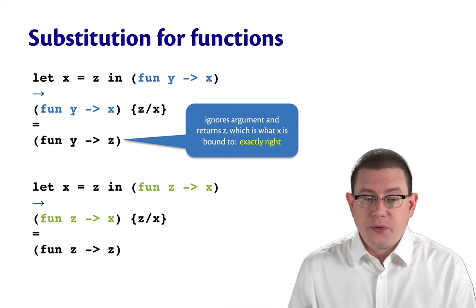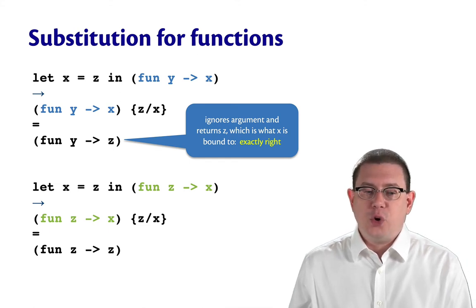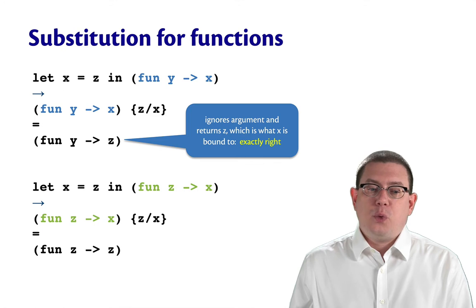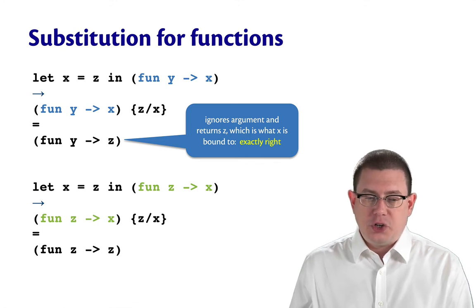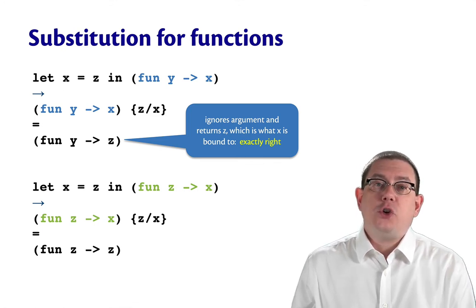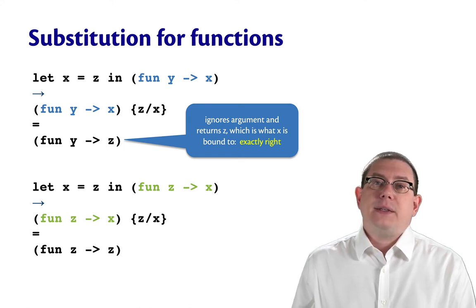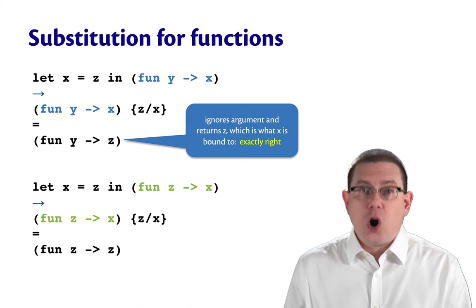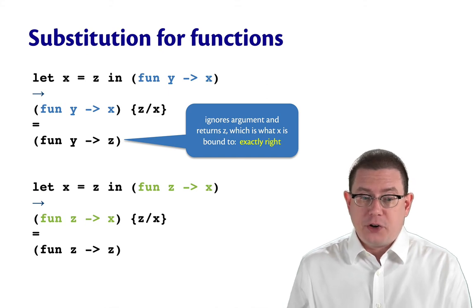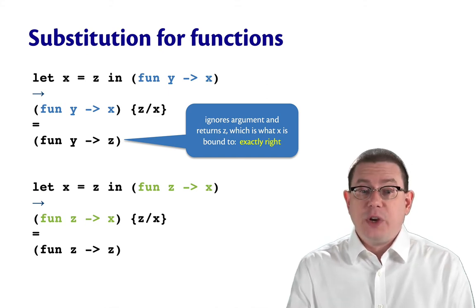Now what about the other function, fun z arrow x, which I put in orange. Well, if you work through the definition of substitution here, we're going to get to substituting z for x inside of that function. But since z is the argument already being bound by that function, we're going to stop and not recurse inside of it.